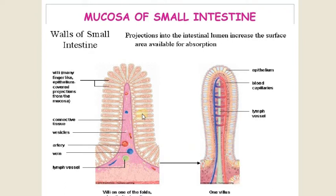Each villus is supplied by microvilli and the brush border. It is also supplied by artery, vein, and lymph vessels, and by a single layer of muscle.